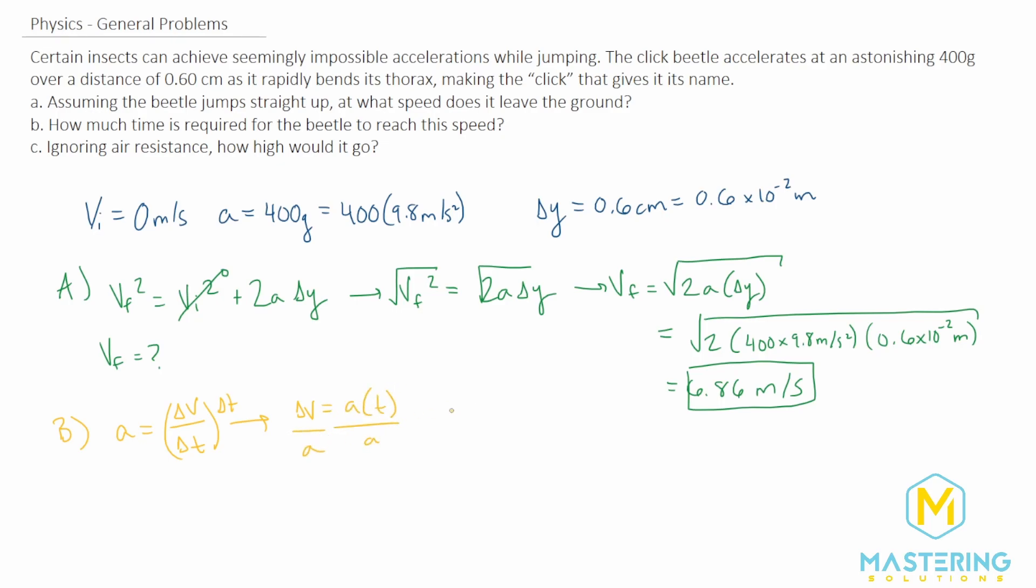And then when we divide both sides of the equation by acceleration, we have time is equal to velocity over acceleration. The initial velocity we said was zero, so the delta V is the same thing as saying final velocity. So this is the value that we'll be plugging in here.